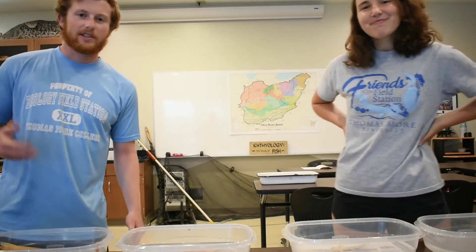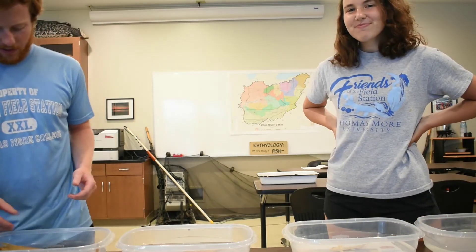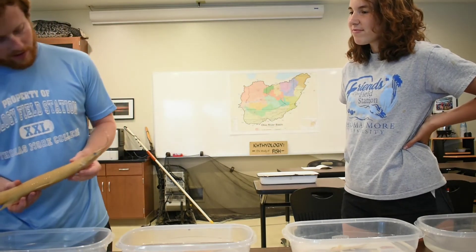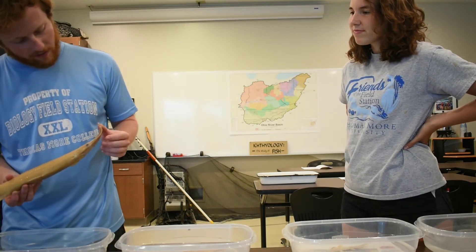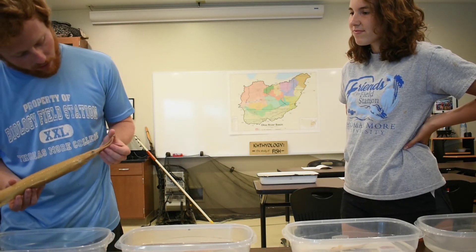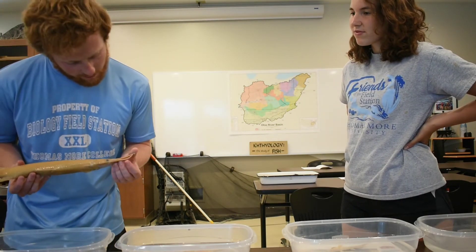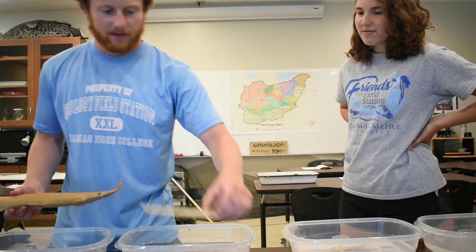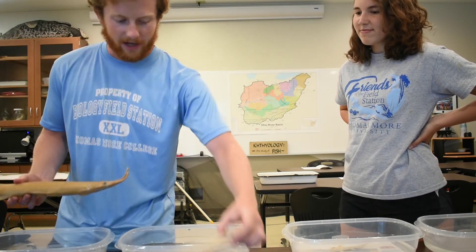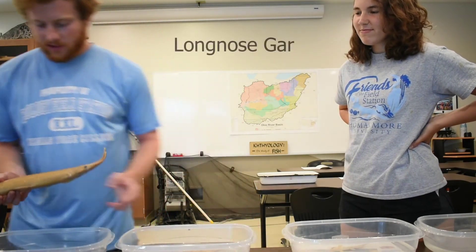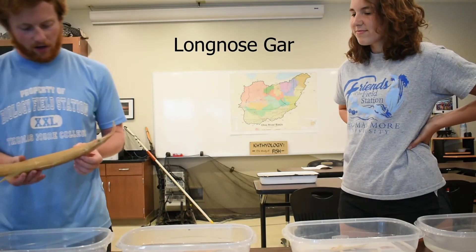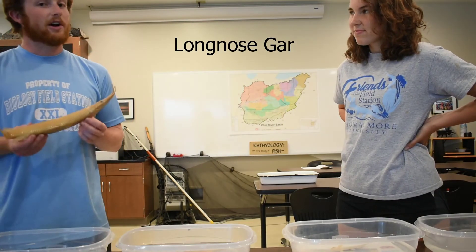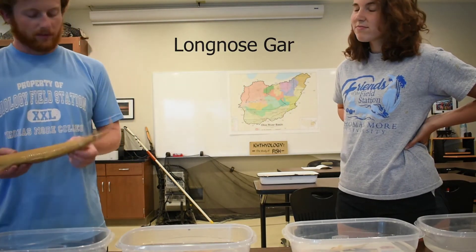So now we're going to look at some specific fish that we would catch in the river. Here you can see it has a very long nose and very sharp teeth. This is from the same organism that I'm holding in my hand. This is a long-nosed gar, and it is a top predator — it eats other fish that are in the river.